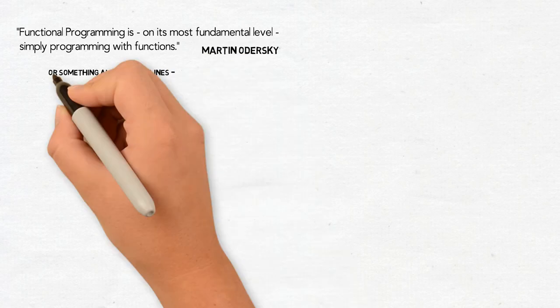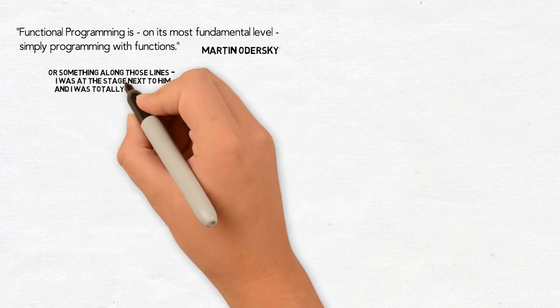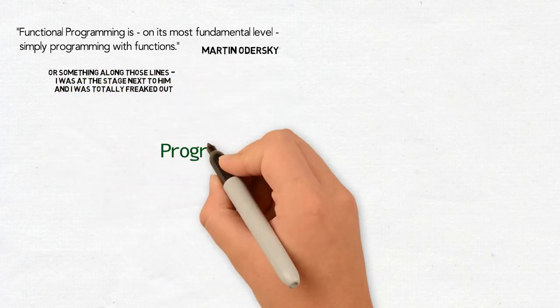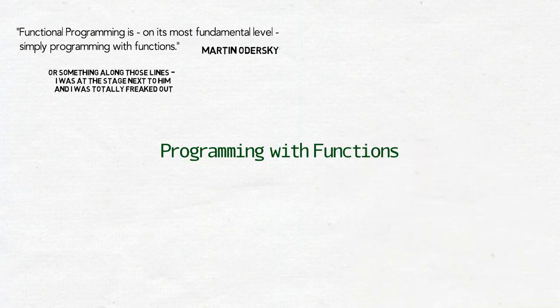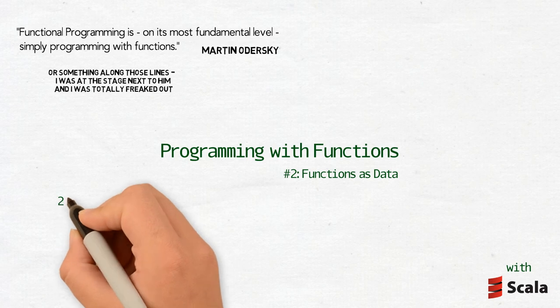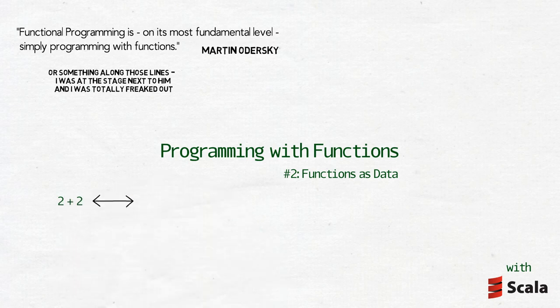A function is a piece of code that takes some data as arguments, performs some operations on it, and returns the result as another piece of data. Adding 2 and 2 is a function. Both numbers are arguments. The name of the function is add, if we want to use the standard notation, or the plus sign, if we want to use an operator. Both are equivalent. The result is 4.